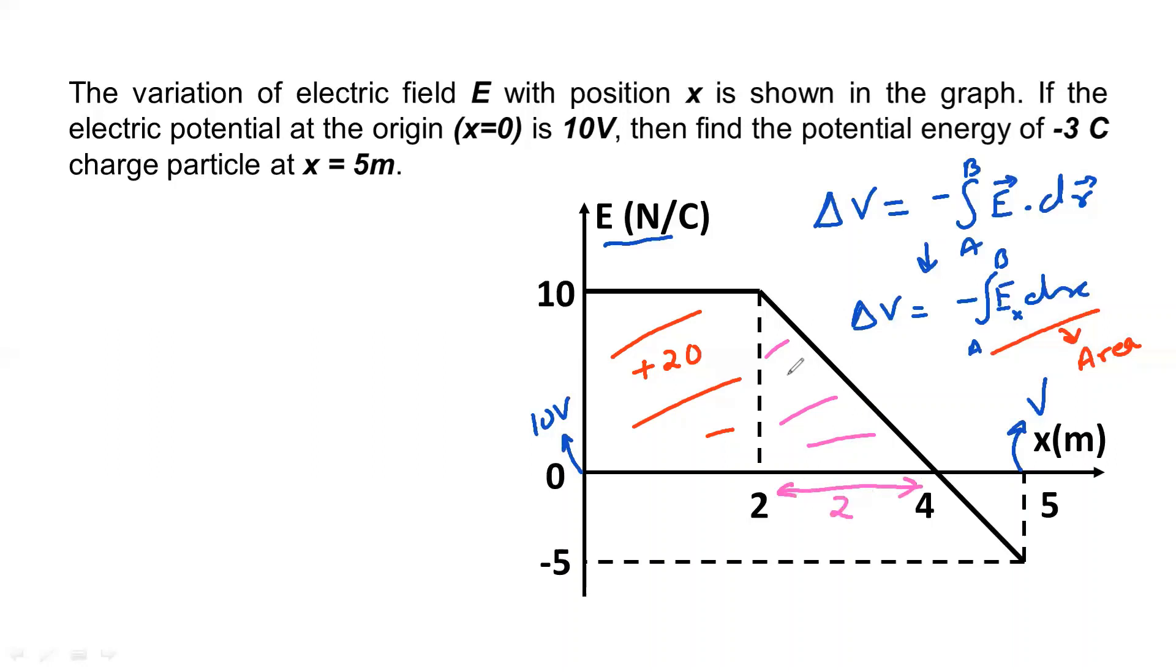What about this one, this particular area, this particular area triangle? Half base height, half into 10 into base 2, half into 2 into 10, that is 10. This will be plus 10.